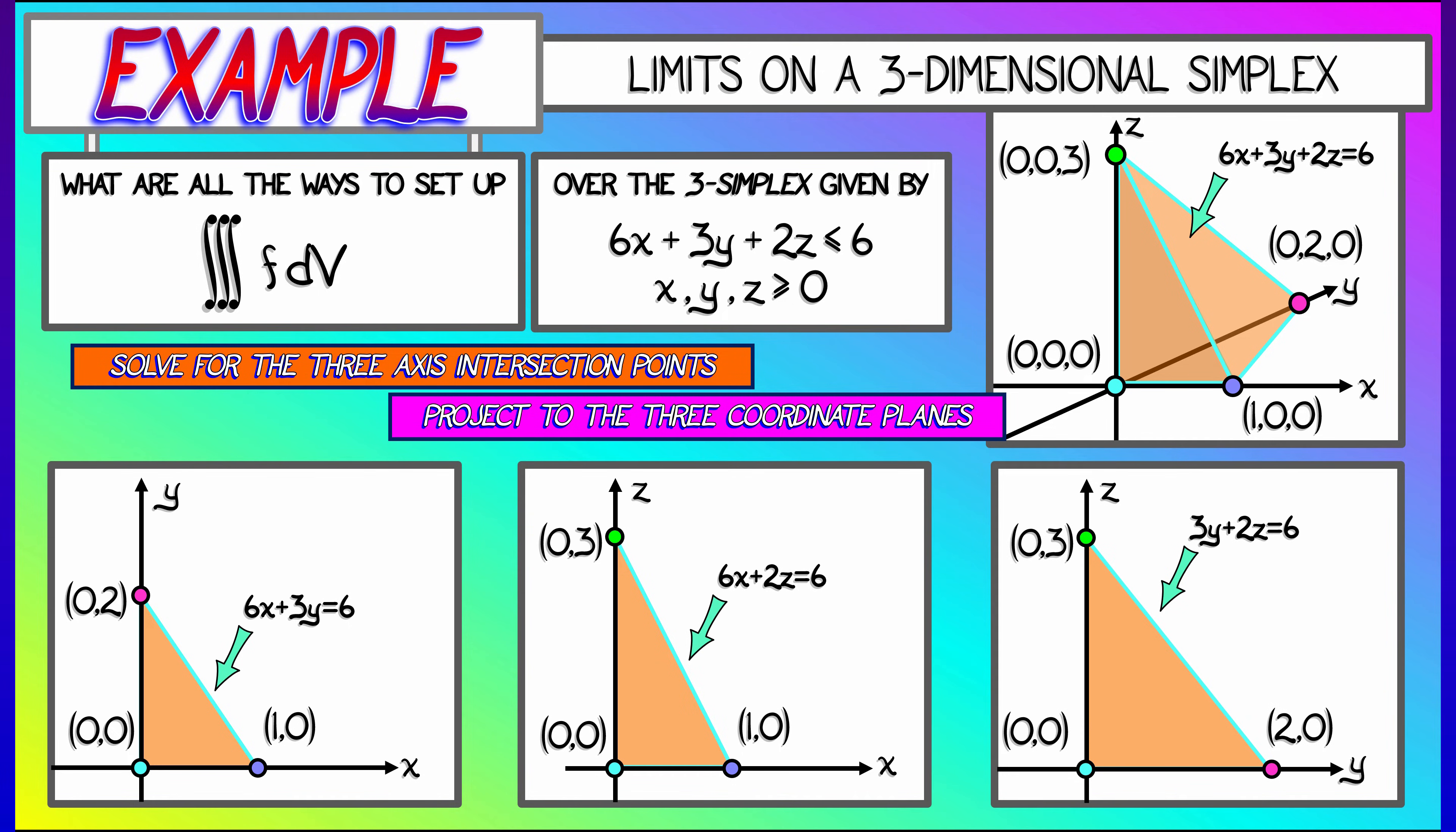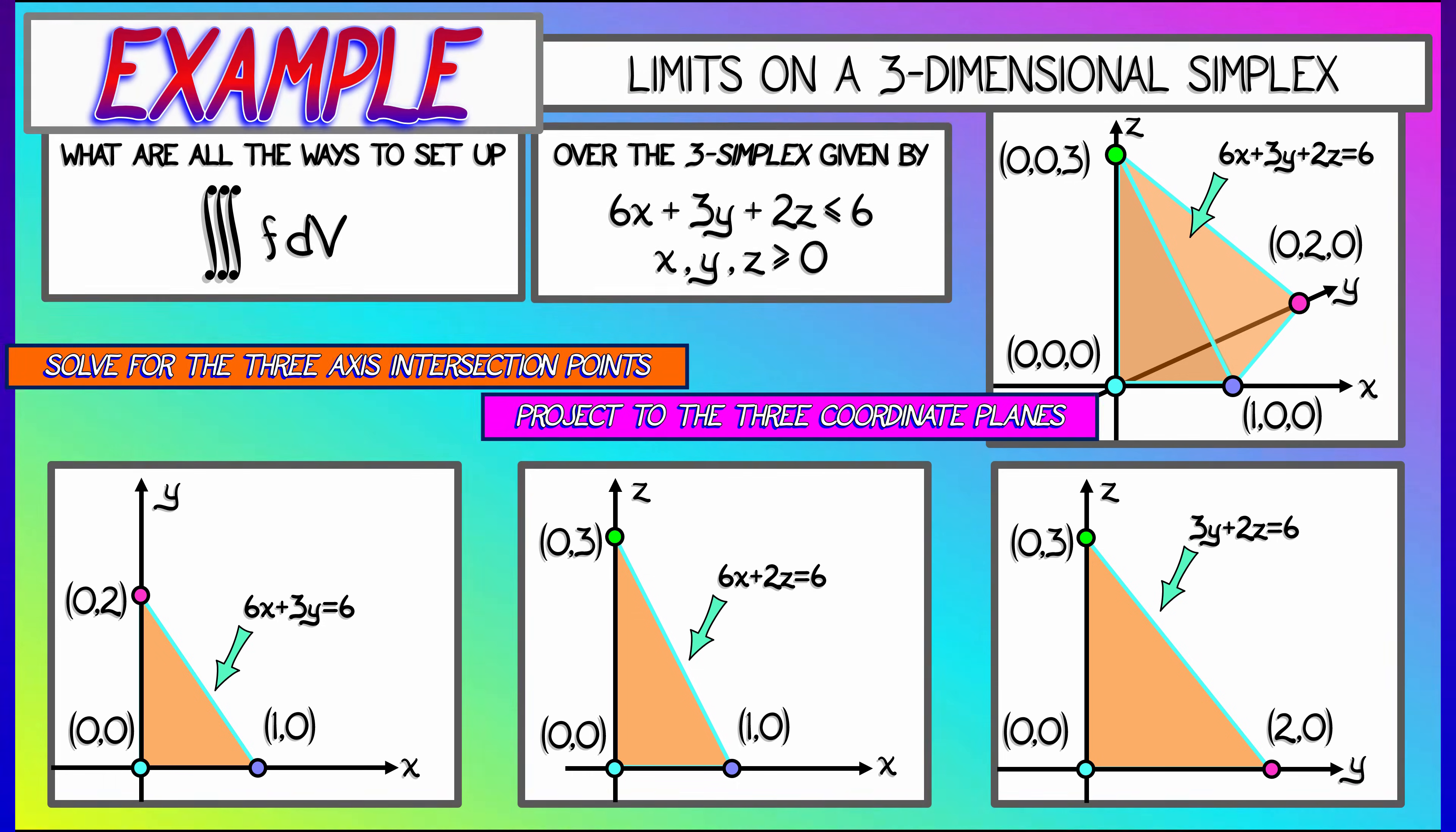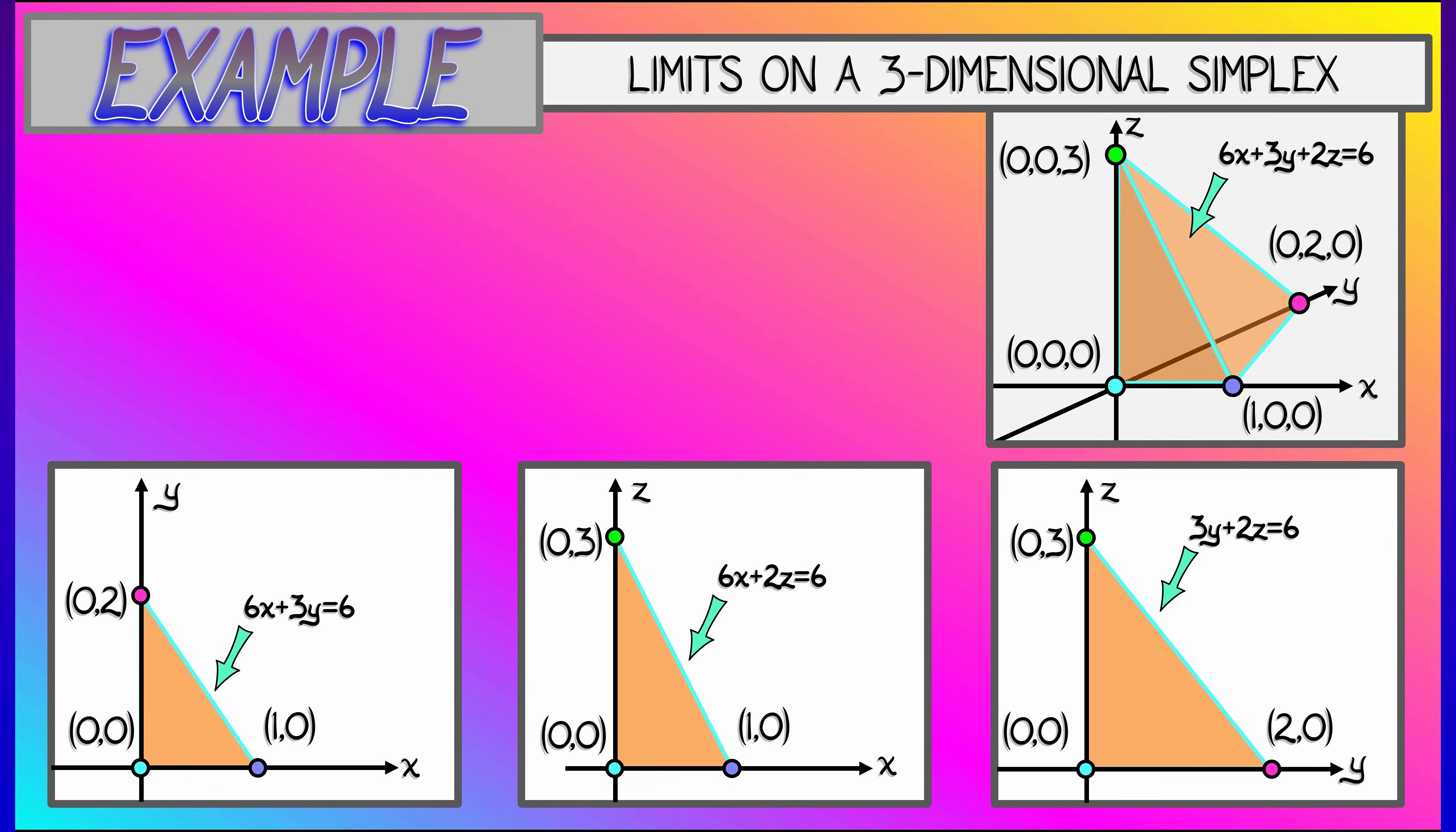Now, the way that we get those, and in particular, the way we get the equations for the lines given by the hypotenuses of these triangles, is to set variables equal to zero in the equation of that plane. So for example, in the x-y plane, set z equal to zero, and we get 6x plus 3y equals 6.